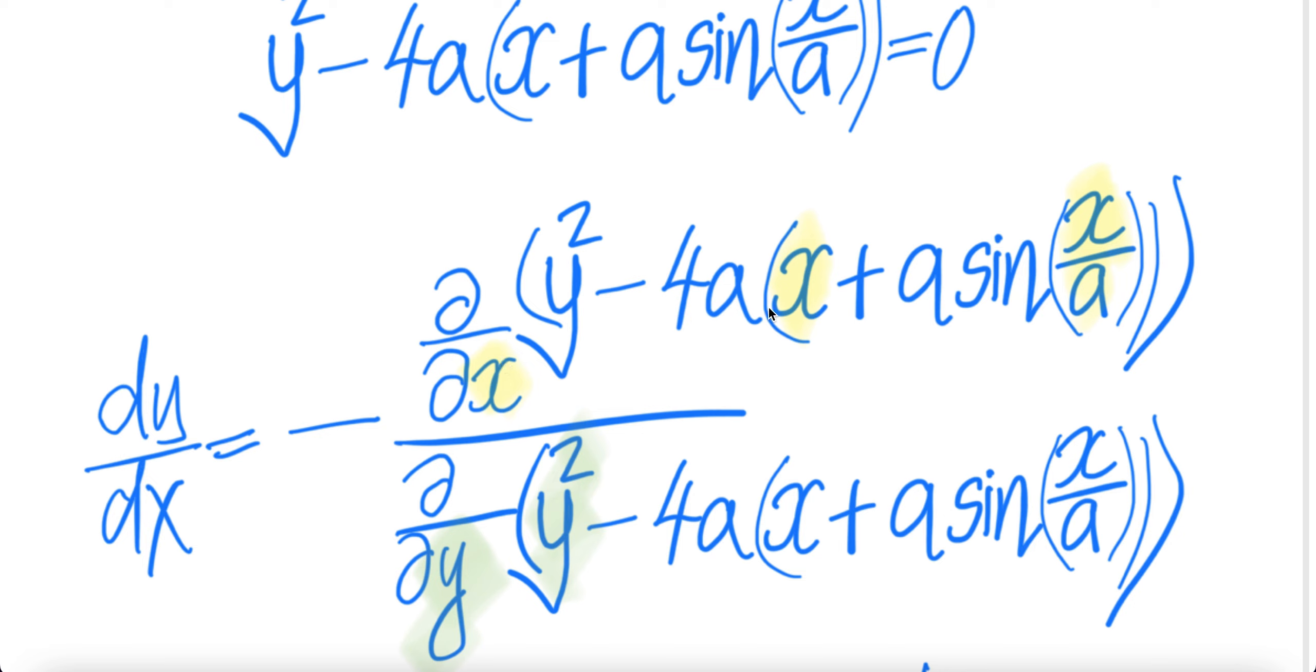And it treats anything that is not x as constant. So this is constant and then a is constant obviously. Here, anything that is not y is considered constant. x is a constant and then a is constant.